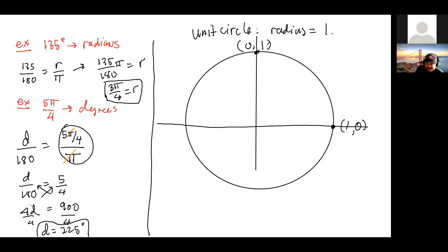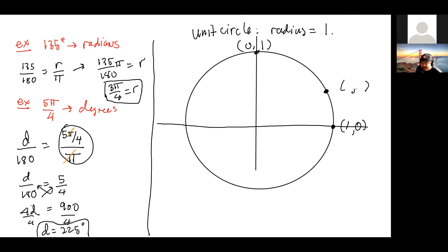Here's what I would like to do. Let's pick this point here and we want to know what is the terminal point. The radius is one, but we don't exactly know how long each component is. To figure out what this point is, if we could figure out how long x is, that tells us x, and how long y is tells us y.